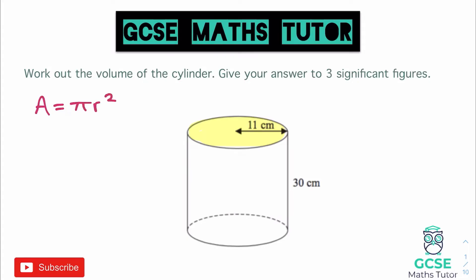This question has given us the radius. Sometimes a question might give you the diameter — it might say the full length across is 22, in which case we would need to halve it to get the radius. So to work out the area here, we're going to do pi multiplied by 11 squared.